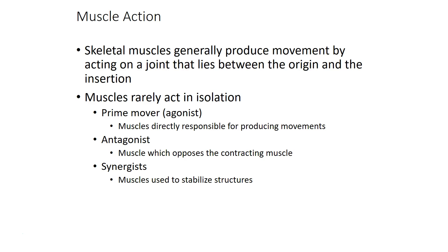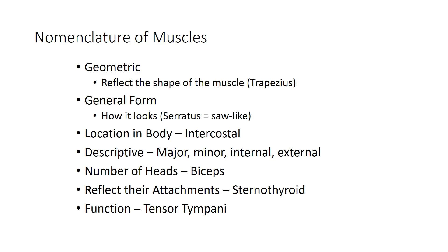The idea is that for most movements in the body, there are muscles that make that movement happen, muscles that make the opposite movement happen, and then related muscles involved in some way but not directly in the movement or the opposite movement. Muscles are named in a variety of ways: based on shape, like trapezius shaped like a trapezoid or serratus shaped like a serrated blade; based on location, like intercostal or internal or external; by number of heads, like biceps and triceps; by attachments, like the sternothyroid; or by function, like the tensor tympani.